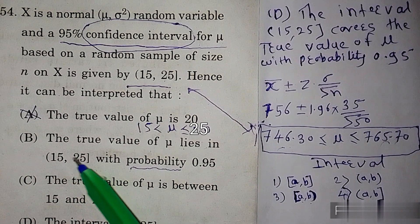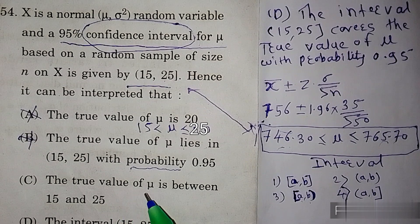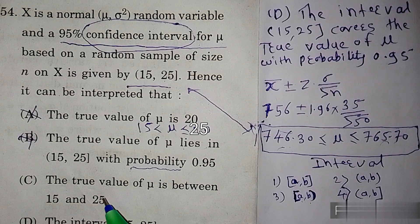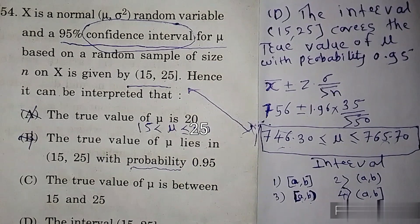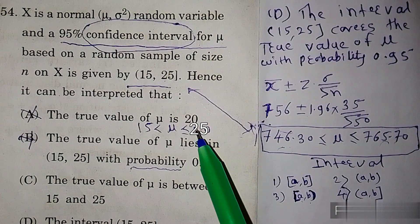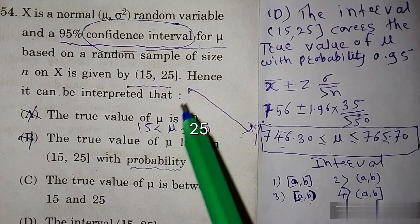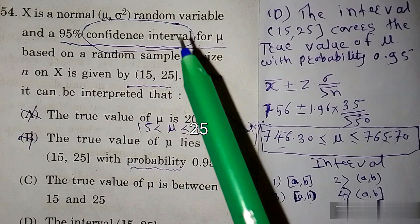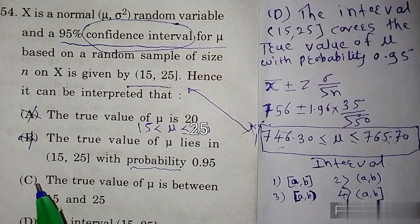Hence option B is wrong. Option C है: the true value of mu is between 15 and 25. हमने देखा कि mu की values इसमें lies भी हो सकती हैं और नहीं भी — क्योंकि यह concept है confidence interval का, यह chances हैं और mu बाहर भी हो सकता है। Hence option C भी wrong है।